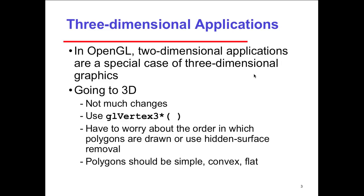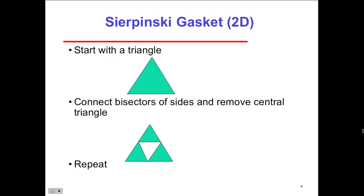So going to 3D, not much changes occur. We use the GL vertex 3. So we have to worry about the order in which the polygons are drawn or use hidden surface removal as a concept. So polygons should be simple, convex, and flat. So hidden surface removal is going to take away and not render surfaces that are not in the viewport. So the camera, if the camera is defined a certain way, we know what's hidden and we don't have to render that.